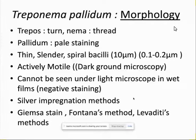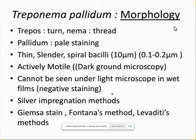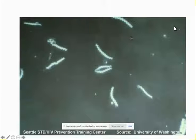Rather than using stains, they can be more easily demonstrated directly in the dark field microscope in wet films or wet smears. This is the real image of the spirochetes observed in dark field microscopy — they are spiral-shaped and actively motile.